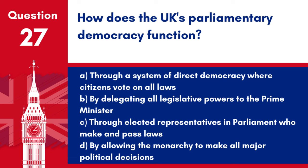Question 27: How does the UK Parliament work? a. Through a system of direct democracy where citizens vote on all laws. b. By delegating all legislative powers to the Prime Minister. c. Through elected representatives in Parliament who make and pass laws. d. By allowing the monarchy to make all major political decisions. Answer: c. Through elected representatives in Parliament who make and pass laws. The UK's parliamentary democracy operates on the principle of representative democracy, with Members of Parliament elected to represent the public's interests.